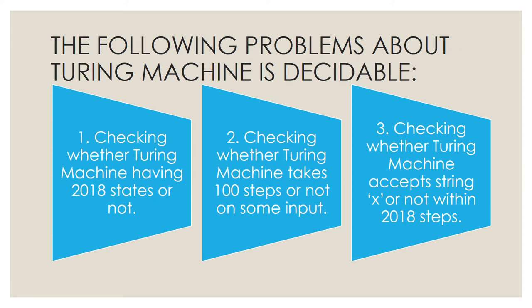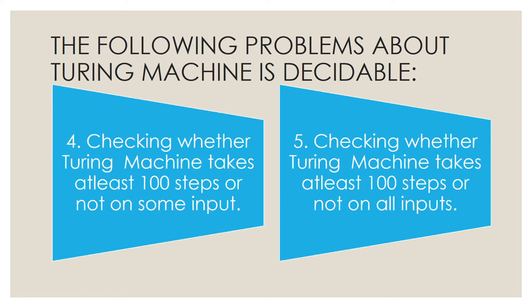The following problems about Turing machines are decidable. First is checking whether a Turing machine has 2018 states or not. Second is checking whether the Turing machine takes 100 steps or not on some input. Third is checking whether the Turing machine accepts string x within 2018 steps or some finite number of steps. Fourth is checking whether the Turing machine takes at least 100 steps on some input. Fifth is the same but for all inputs — checking whether the Turing machine takes at least 100 steps on all inputs. These are all decidable.